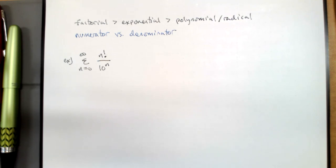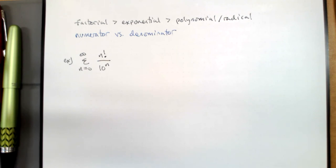When you say something is growing exponentially, you are saying a specific mathematical thing — something must be increasing by a percentage. If someone uses that term loosely, you could ask: what is the continuous rate of increase?